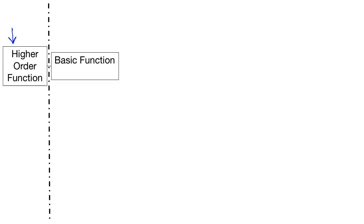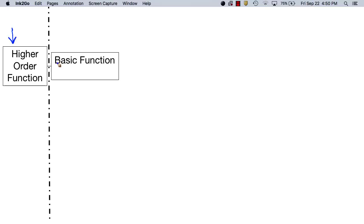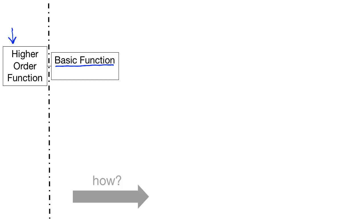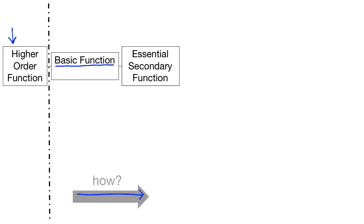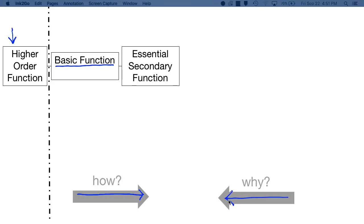So I'll explain the structure of a typical FAST diagram. First, we have the left system boundary. Just outside of the boundary is the higher order function — basically the overall output you want to get from your device. The basic function is that overall function of the product. Next, we ask how that basic function occurs. In general, we move to the right of the diagram, attaching functions by asking how. We can also ask why in the right-to-left direction: why does the essential secondary function occur? Because we need the basic function to occur.